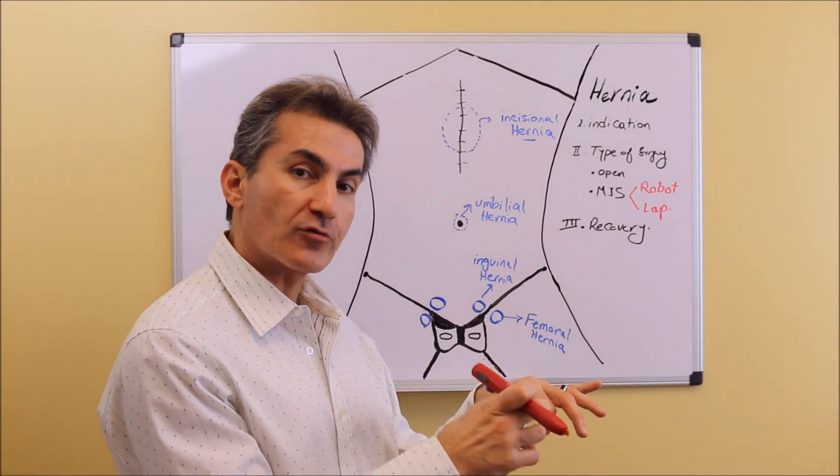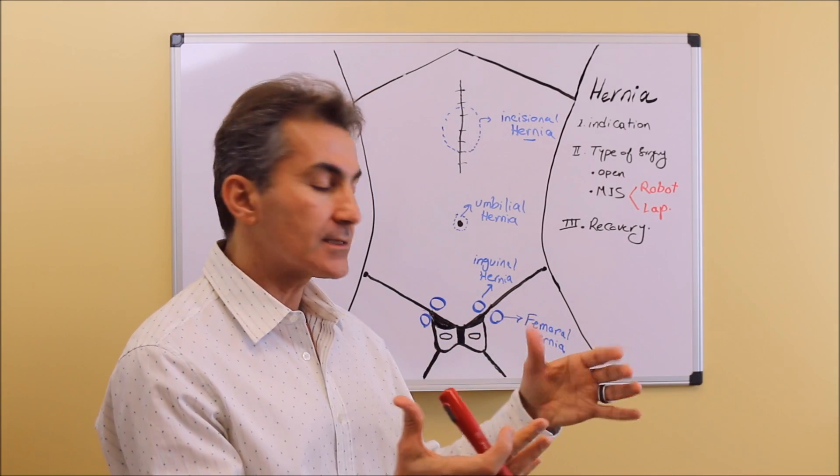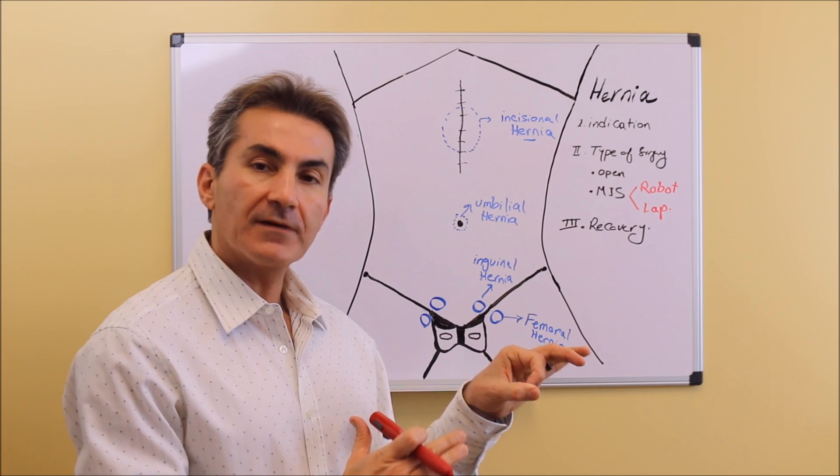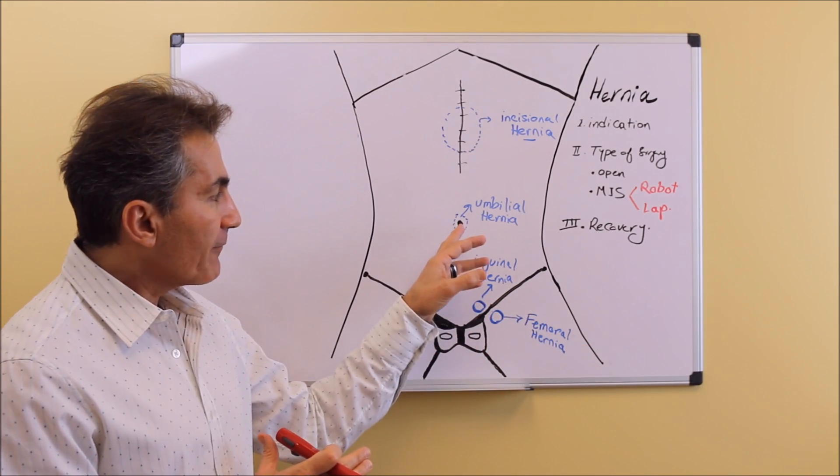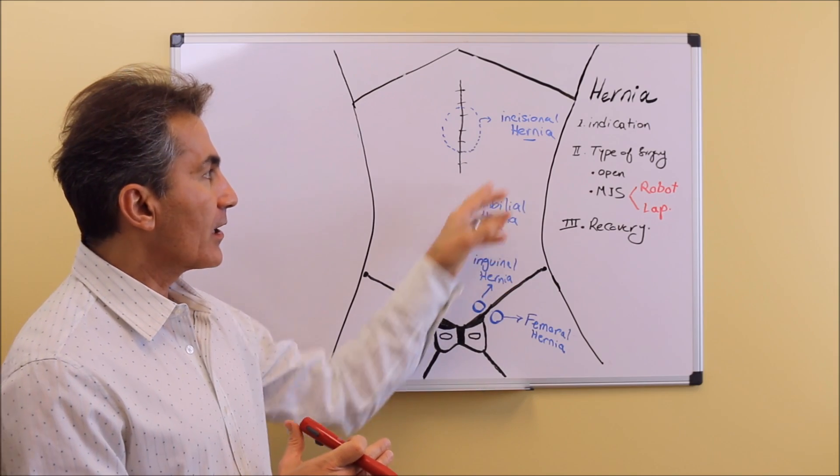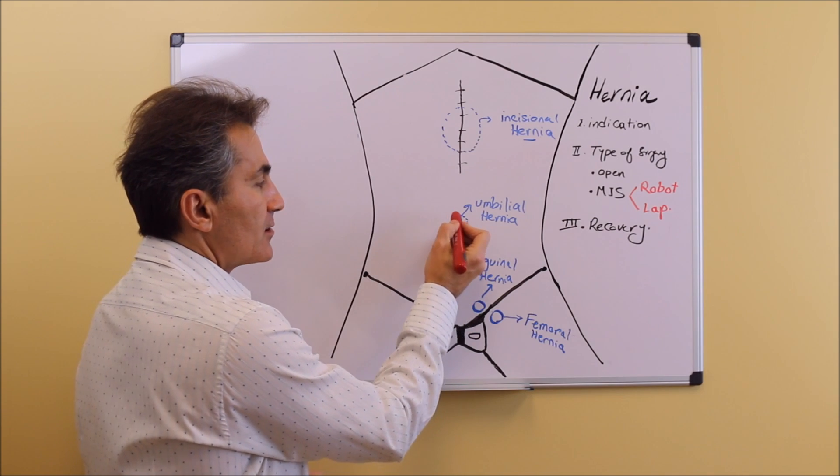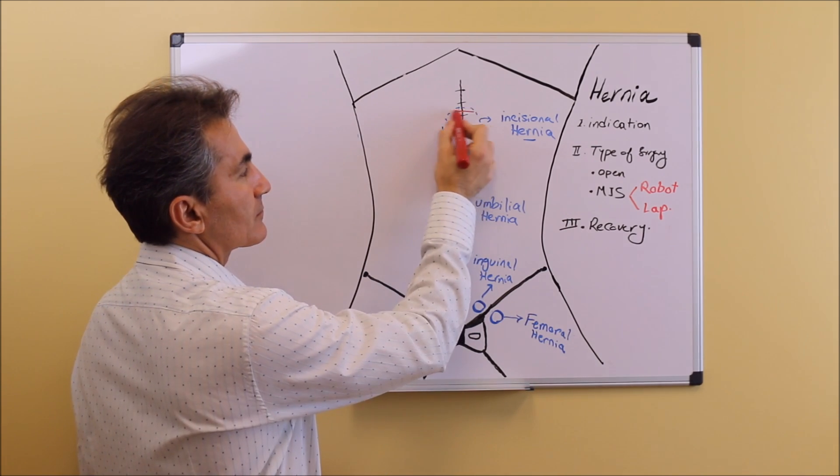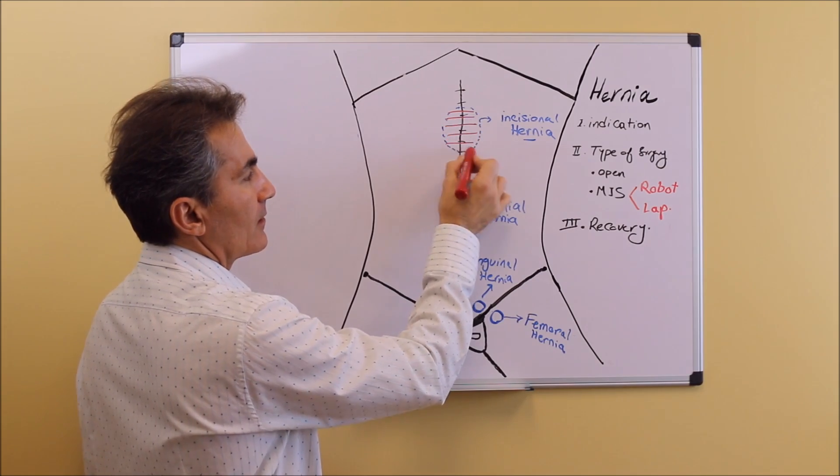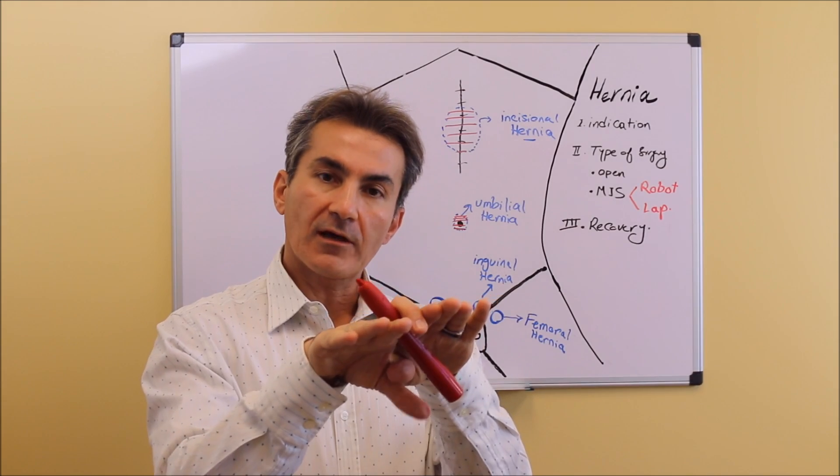Then I push the contents of the abdomen that are incarcerated or trapped inside the hernia back inside the abdomen in their place, and somehow we need to fix that hole. For umbilical hernia or incisional hernia, I can directly close them with a suture. I close the defect primarily with strong sutures.